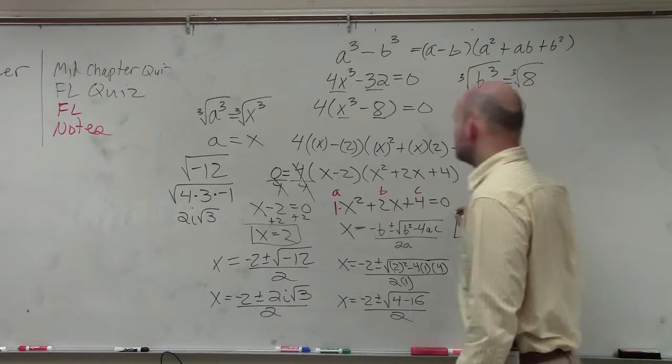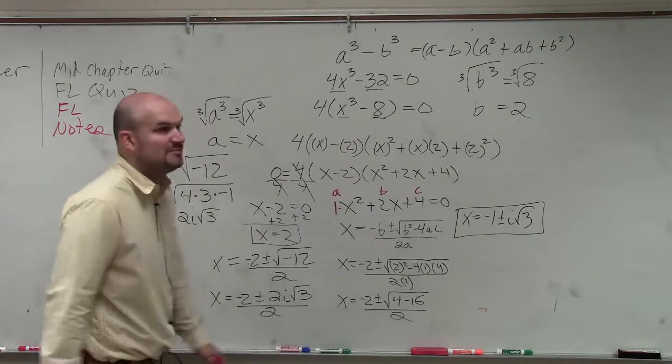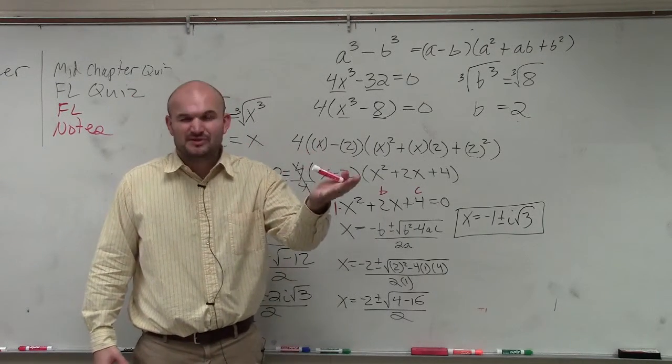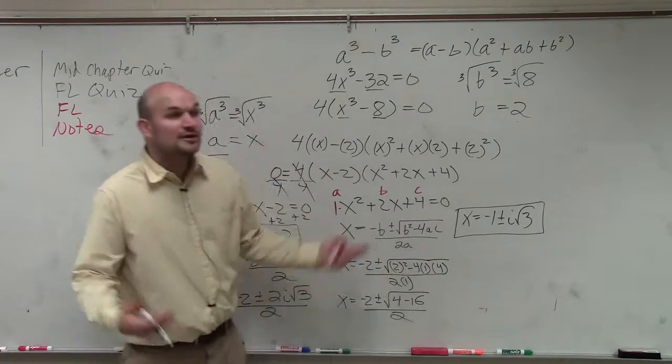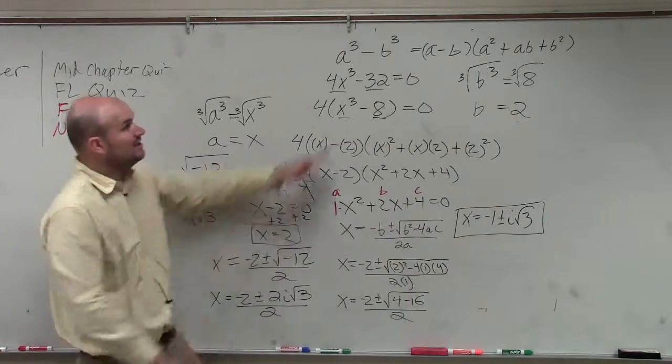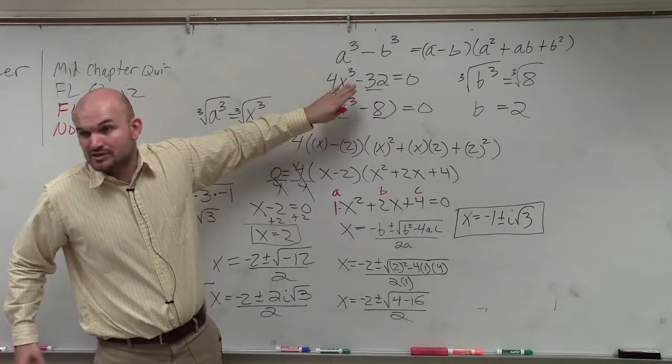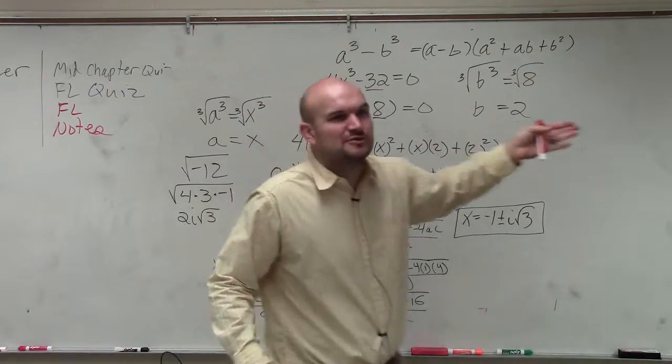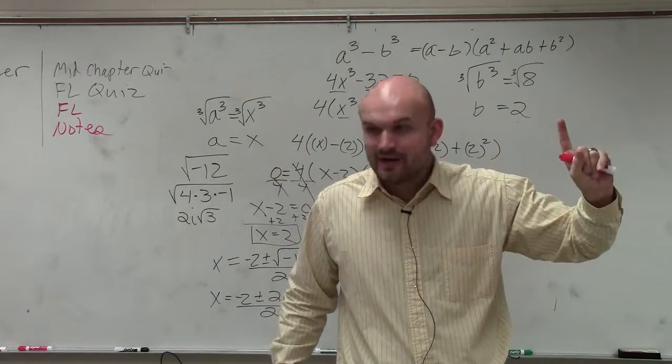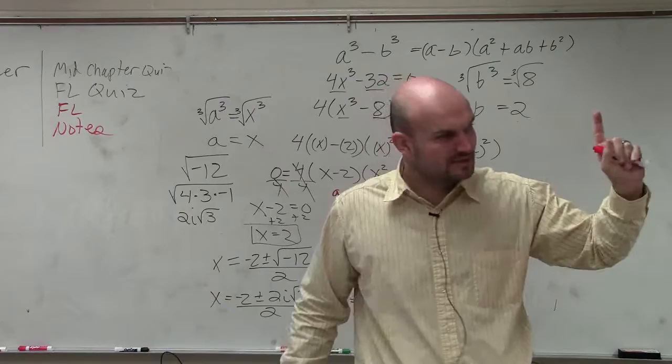How many of those solutions do I have there? If I have the plus or minus, I have what? Two of them. And they are both what type of solutions? Complex solutions. So let's think about it. I have two complex solutions plus one real solution. That gives me a total of three solutions. However, how many x-intercepts do I have for this graph? Real x-intercepts. Just one. Does everybody see that? See how that kind of works?